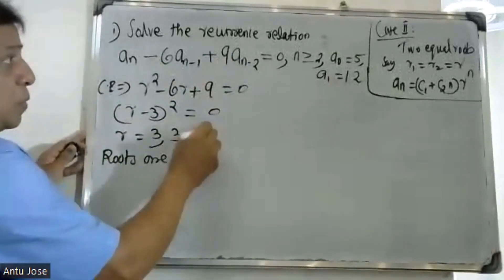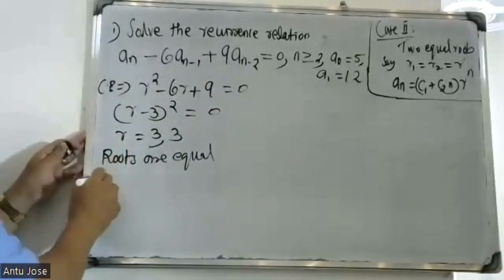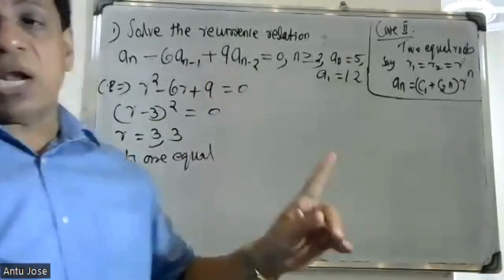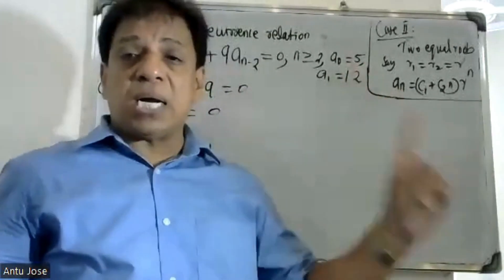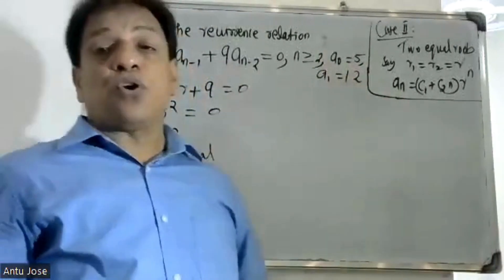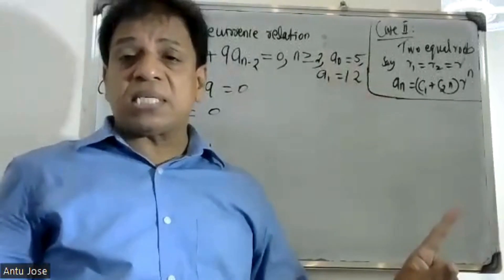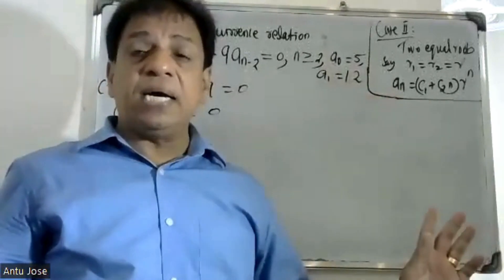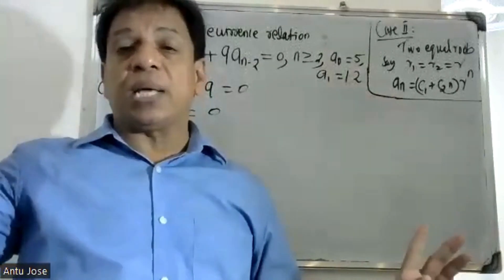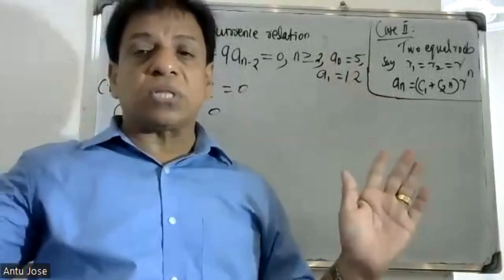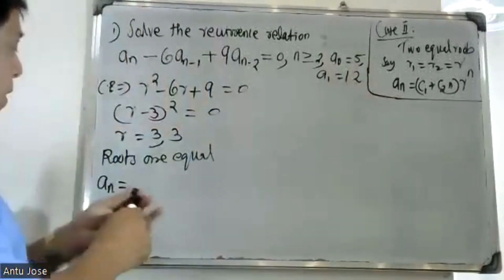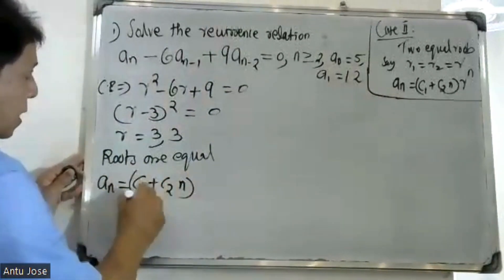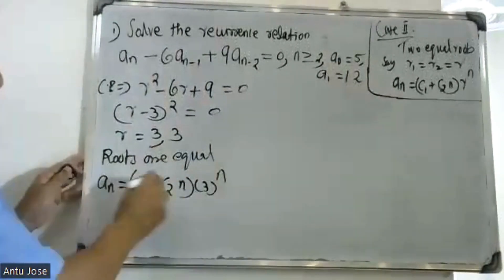Since the roots are equal, r1 = r2 = r = 3. For equal roots, the general solution formula is: a(n) = (C1 + C2·n)·r^n. Applying boundary conditions next.